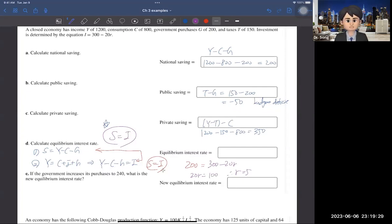Now, question number E, it says that if the government increases its purchase to 240, what is the new equilibrium interest rate? Then, you need to recalculate the saving.